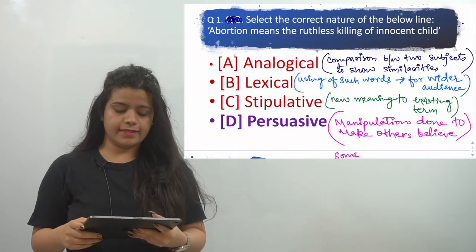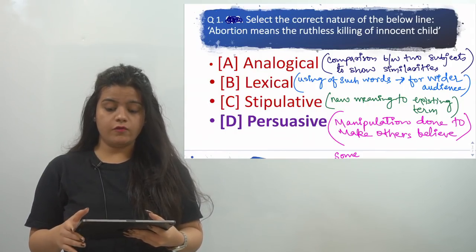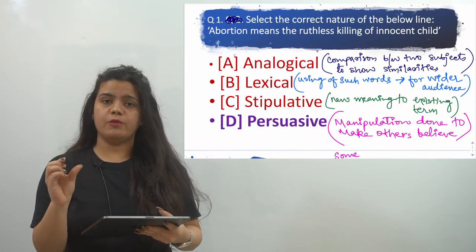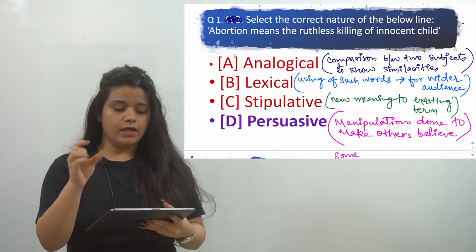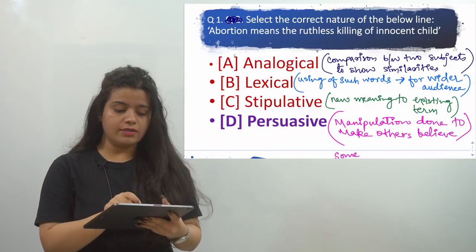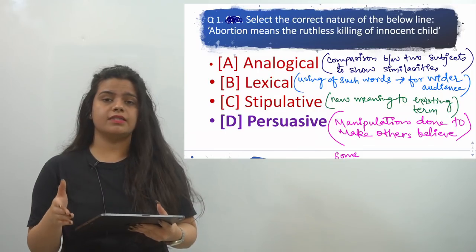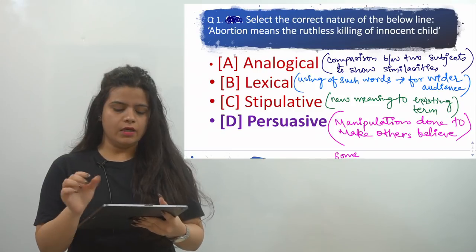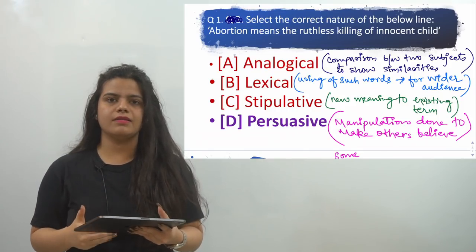Our first question for today is: select the correct nature of the below line — 'Abortion means the ruthless killing of innocent child.' This is a question from logical reasoning, part of arguments — specifically from the definitions category. The options are: whether it is analogical, lexical, stipulative, or persuasive. First of all, we need to understand what these four options mean, because without knowing their meanings, we cannot answer the question.